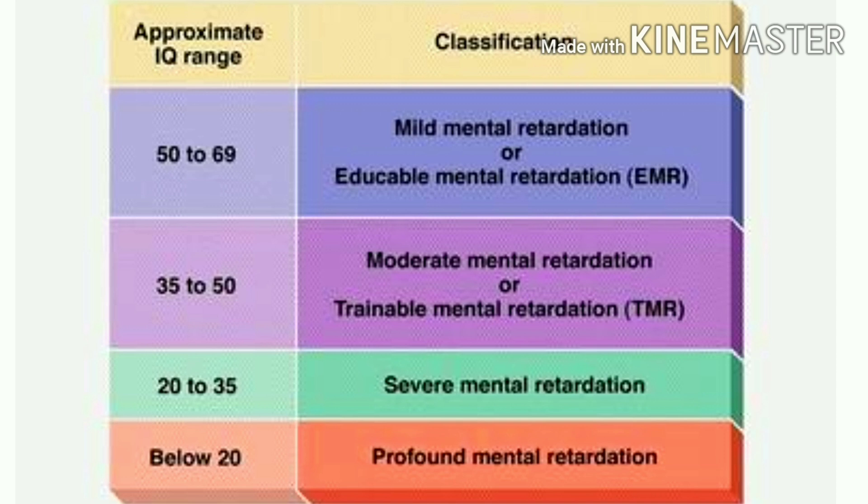Mild MR: IQ 50–70. Moderate MR: IQ 35–50. Severe MR: IQ 20–35. And profound MR: IQ below 20.